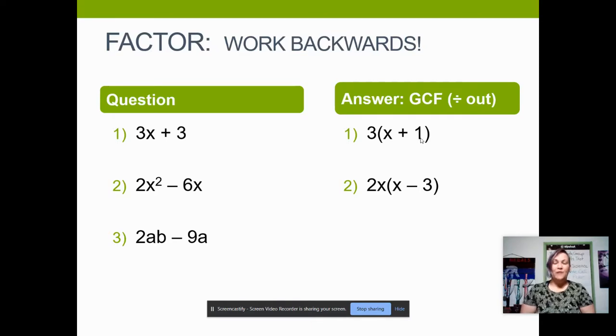For my third example, I don't have a number as part of my GCF because 2 and 9 do not share any common factors, except for 1, but we don't usually write that down. So the only GCF on that one is the letter a, which is the only thing that they have in common. So it's also okay to just have a variable for your GCF and no numbers. And that's going to take both of the a's out to the front, leaving us with just the 2b minus 9.